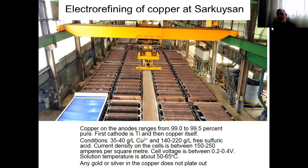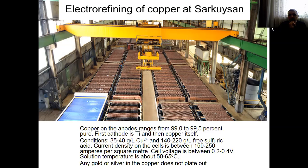The initial cathode is titanium, and then copper itself — you can slip the deposited copper from the titanium, and then the cathode becomes copper itself. The conditions change. The current density in the cells is between 150 to 250 amperes per square meter. As I said before, this is the electro-refining of copper at Sarkuysan, and in each plant these parameters can be varied, so you don't need to memorize them.